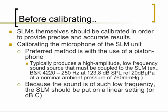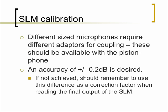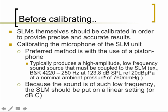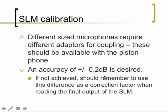If that piston phone is connected to the sound level meter and engaged, the output of the sound level meter should read exactly 123.8 dB SPL. If it reads anything different, one would have to use a correction factor. Different sized microphones require different adapters for coupling. What is permitted is a plus or minus 0.2 dB tolerance. If the reading is outside that range, a correction factor must be applied for the final output when doing audiometric calibration.